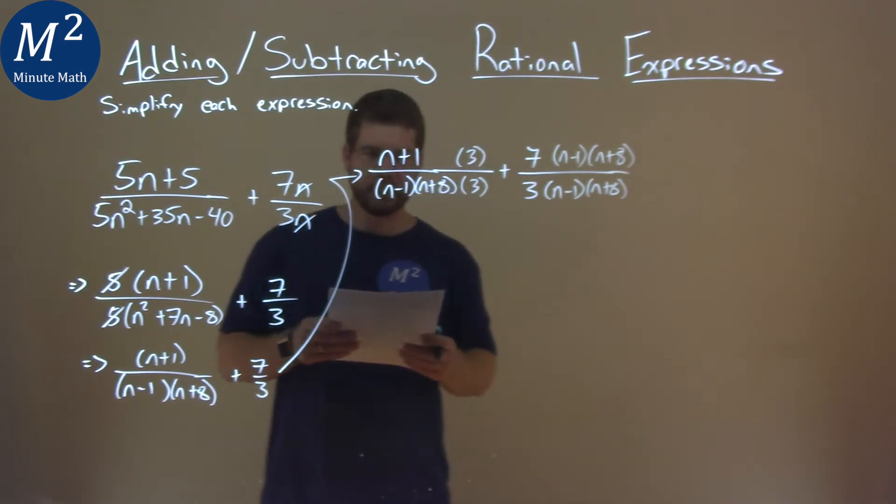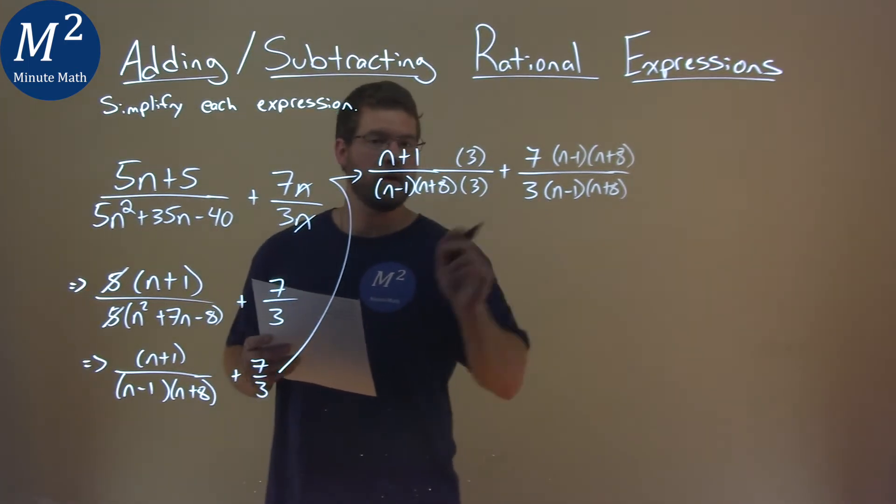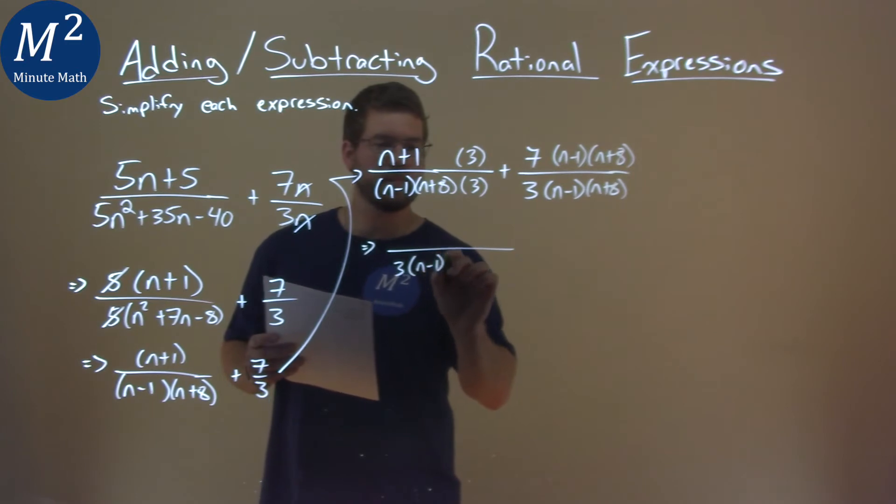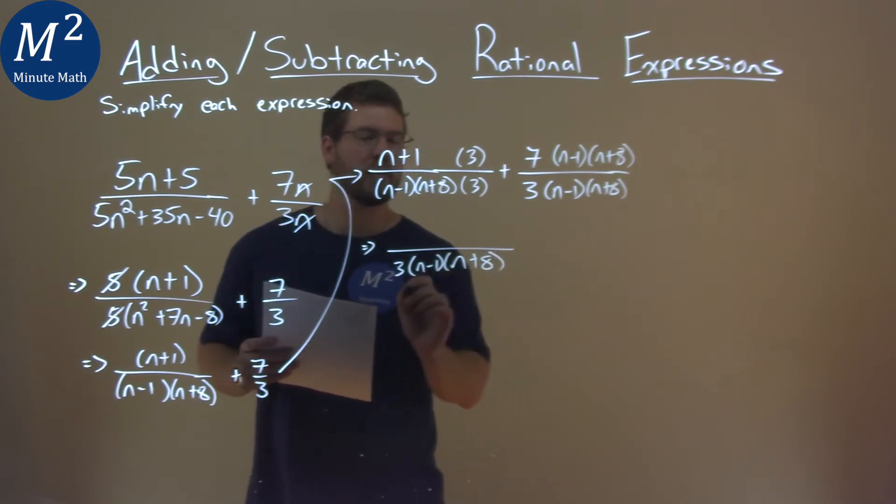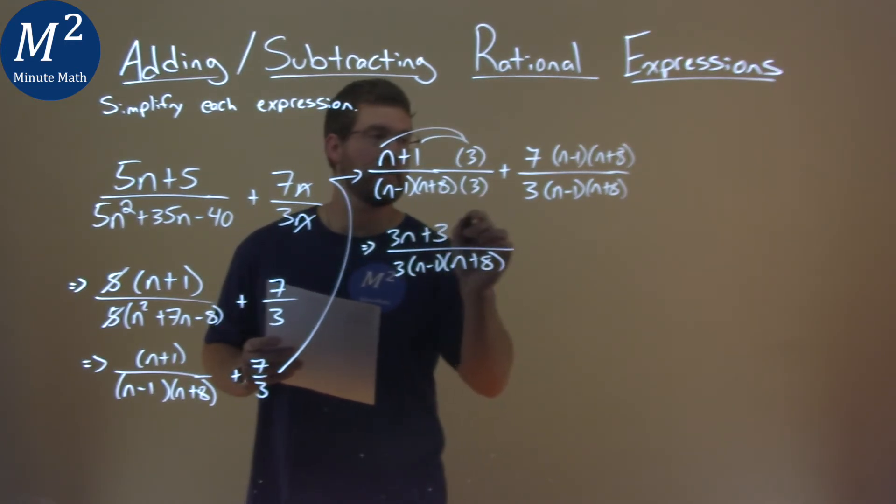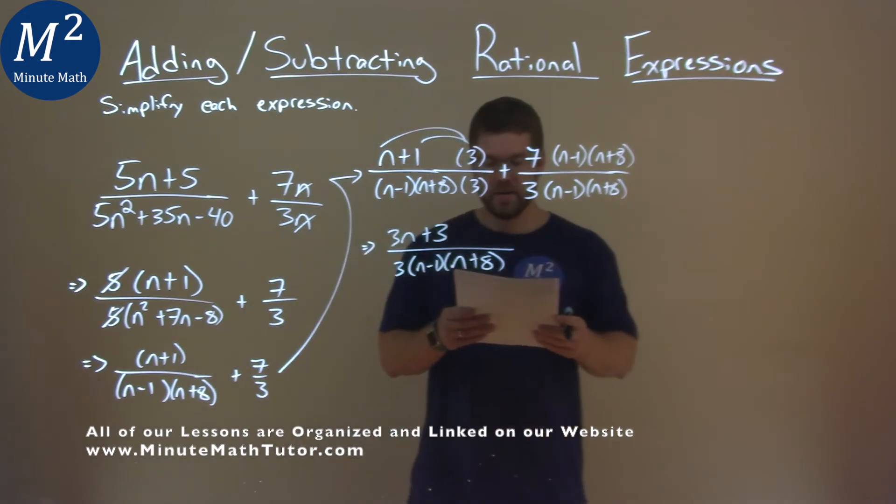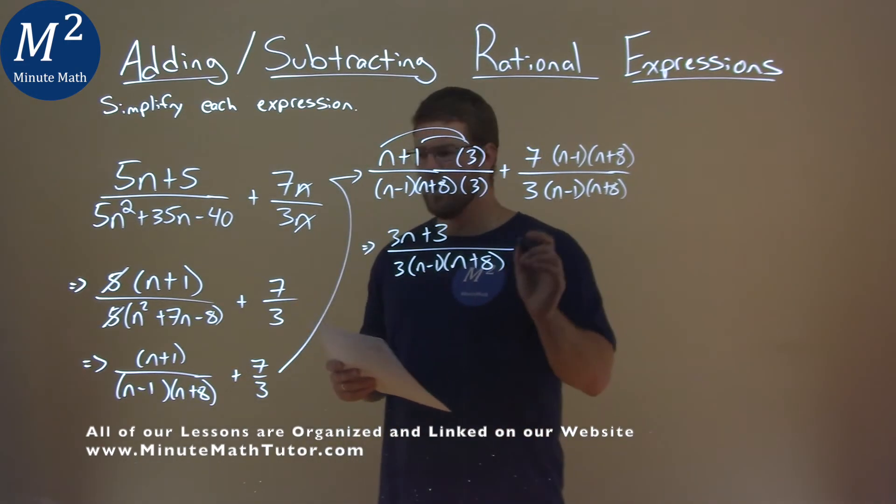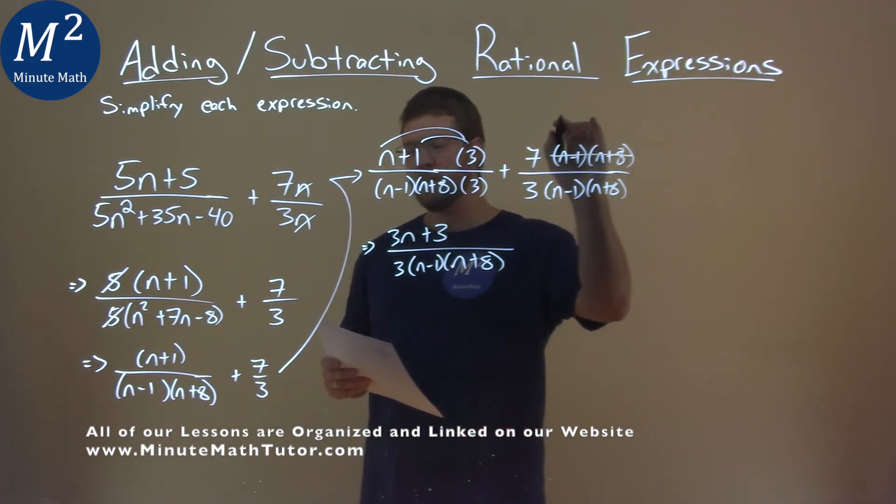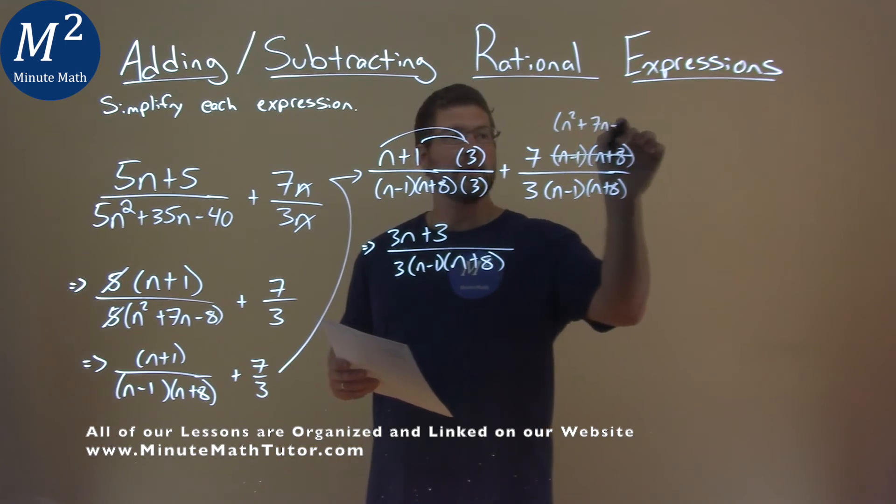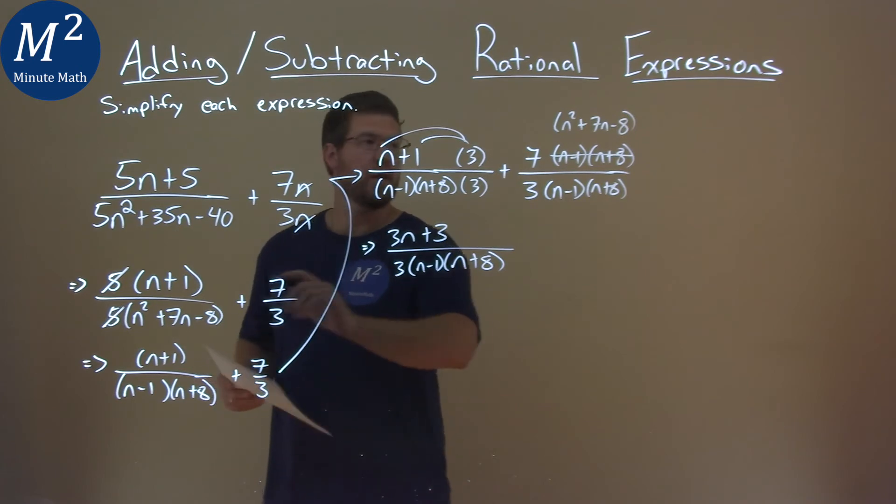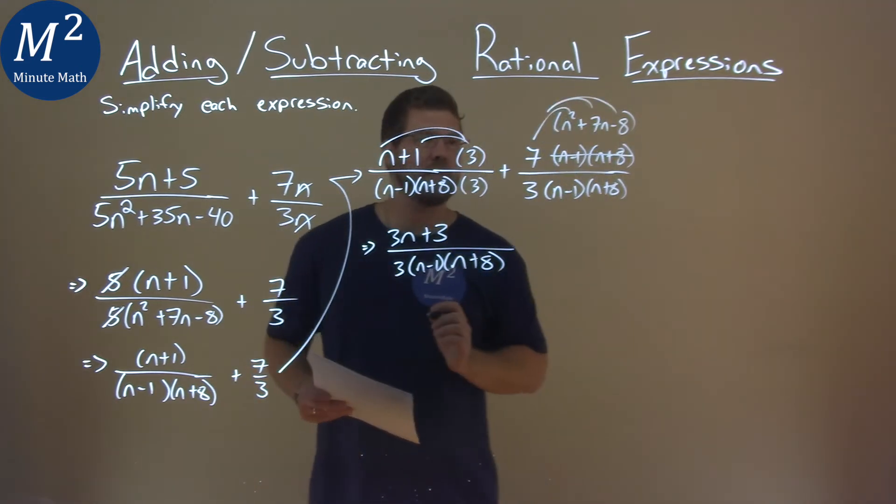Now from here, we have the same base. So we can combine this as one big fraction. We have a 3, put it out front, n minus 1, n plus 8 here. The numerator we need to distribute. n times 3 is 3n, and 1 times 3 is 3. Same thing here. Now, notice we know that n minus 1 times n plus 8 was right here. So I can give a little note to myself like this. n squared plus 7n minus 8, like that. Because we know they're the same. We already found that out. And that's going to help us when we distribute.